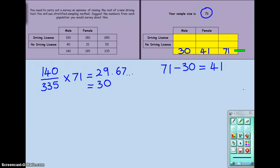Now, let's focus on the breakdown of the number with a driving licence and without a driving licence. Again, we're going to approach it in a very similar way. Now, we'll deal with the males first. Now, 100 of the 140 males in the original population had driving licences. So that's my fraction.